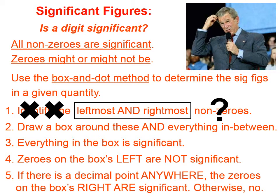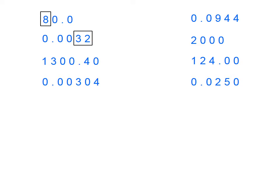Yes decimal, yes significant. Yes decimal — let's try a few of these. In the left column, if we draw our boxes, we're going to find the leftmost non-zero and the rightmost non-zero. We're going to draw a box around them and anything that's in between them.